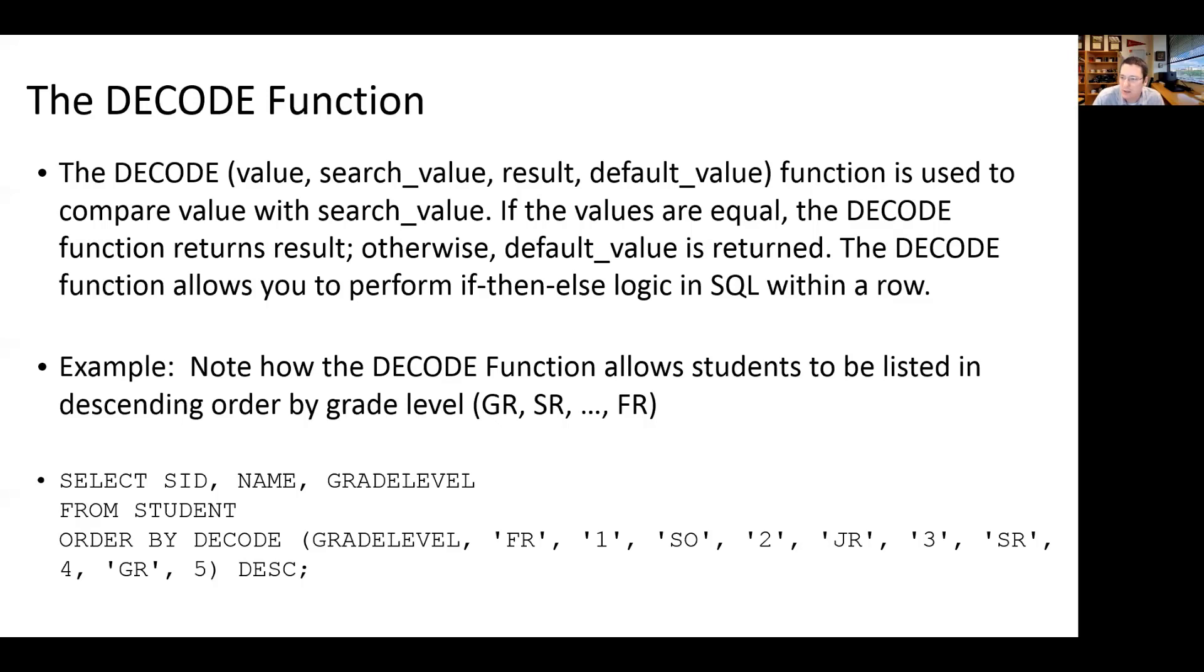In this example here, we're looking for the student ID, name, and grade level, and we want to order by this decoded grade level. If you want to return students in their order of progression through college or through high school as freshmen, sophomore, junior, then senior, and then graduate, you can't do that alphabetically.